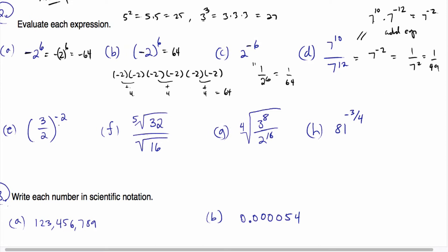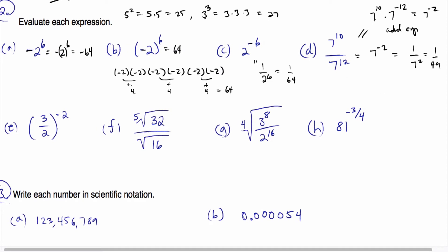Moving along: when we raise a fraction to a power, we raise both numerator and denominator to that power. But this has a negative attached to it, and that negative tells us to flip the fraction. So this is equivalent to 2 thirds squared. Squaring the numerator gives 4, and squaring the denominator gives 9.